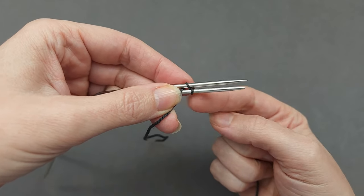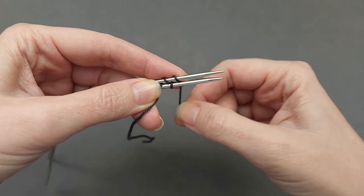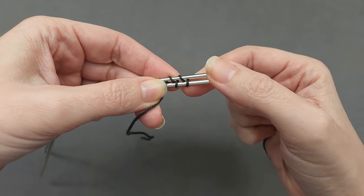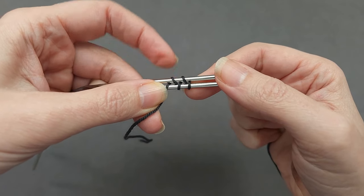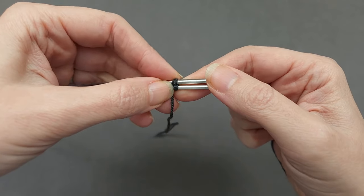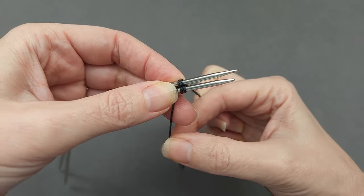As you continue making figure-8s, you want to make sure that your yarn is snug and your stitches aren't spread apart like this. They need to be very, very close together. If the stitches are spread out...